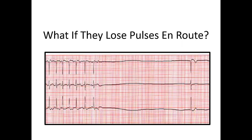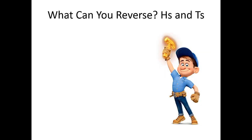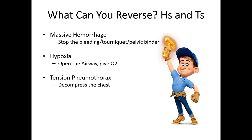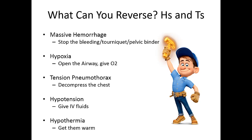What happens if you decide to load and go but the patient loses their pulse on the way to the hospital? There are actually a lot of things we can do — the reversible causes, your H's and T's. We can stop massive hemorrhage using a tourniquet or pelvic binder. You can correct hypoxia by opening the airway and giving supplemental O2. You can decompress the tension pneumothorax, try to correct hypotension by giving IV fluids, and protect against hypothermia.